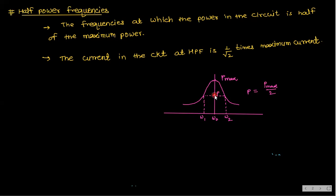For the half power level P = Pmax/2, there are two corresponding frequencies: ω₂ and ω₁. The current at half power frequencies is (1/√2) times the maximum current, which is 0.707, or 70.7% of maximum current. These two frequencies ω₁ and ω₂ are called the half power frequencies.